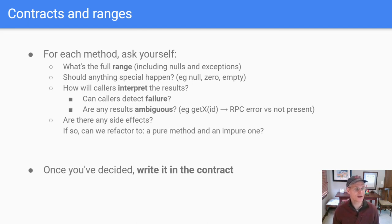And then finally, if you have any side effects for calling your method, you probably want to talk about those. And if you do have any side effects, is there a possibility that you can refactor this into a pure method and an impure one? So once you've decided again, write it in the contract. The contract is your choice, you can decide what exactly happens, what things you accept, and what things you're going to emit, but it's a great idea to write it down.